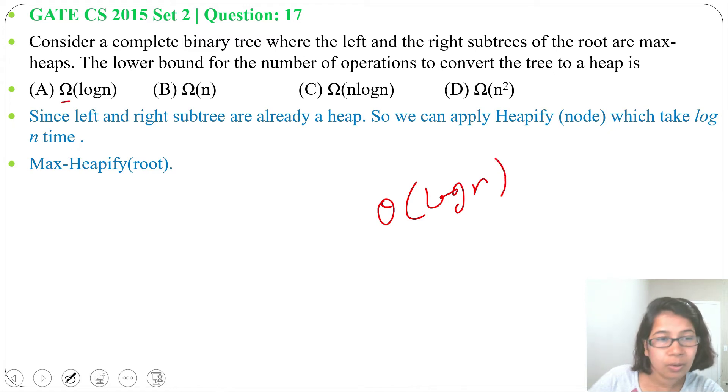That is present in option A, so running time will be option A - omega of log n. The lower bound for the number of operations to convert the tree into heap is omega of log n. We'll just apply heapify on root.